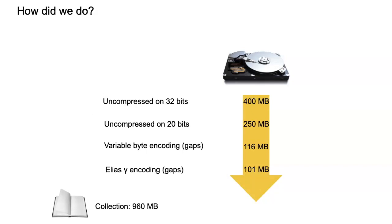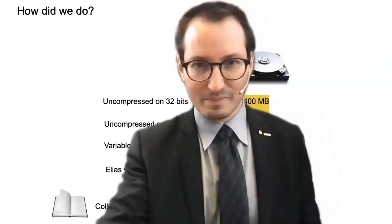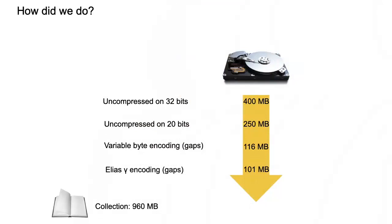There is also delta encoding in the exercises — it would be a good experiment to test it. This was for a collection of 960 megabytes. Concretely, we can squeeze bigger collections into less hardware and save on hardware costs for the indices. Plus, if you manage to squeeze everything into a single machine, you don't have to deal with network issues and latency.